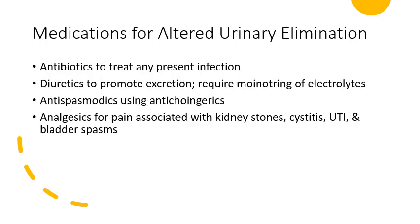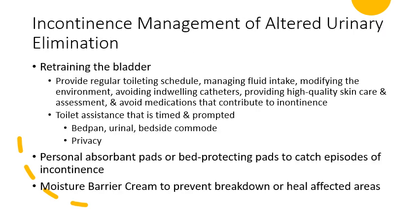Medications for altered urinary elimination include antibiotics to treat infections like UTIs, diuretics to promote excretion (requiring electrolyte monitoring), anti-spasmodics and anticholinergics to control bladder spasms and urinary urgency, and analgesics for pain associated with kidney stones, cystitis, UTIs, and bladder spasms.